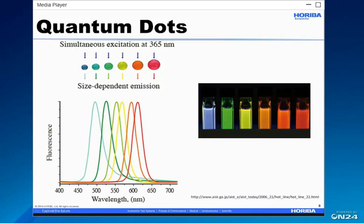Quantum dots are a special class of semiconductors which range from 2 to 10 nanometers in diameter. Because of their unusually high surface-to-volume ratios, quantum dots display unique optical and electrical properties that are different in character to those of the corresponding bulk material. The most apparent of these is the emission of photons under excitation, which are visible to the human eye as light. Moreover, the wavelength of these photon emissions depends not on the material from which the quantum dot is made, but rather its size.